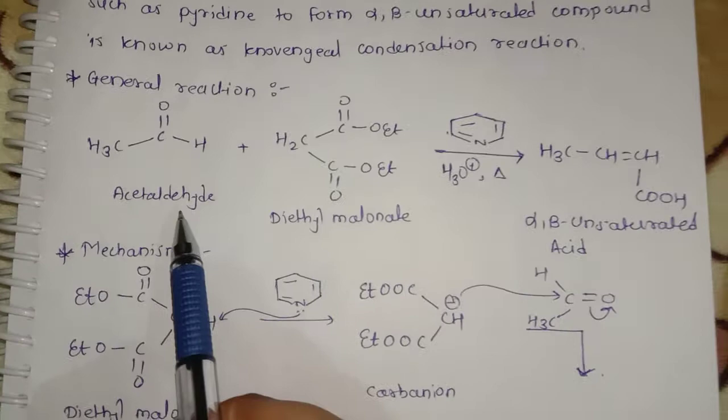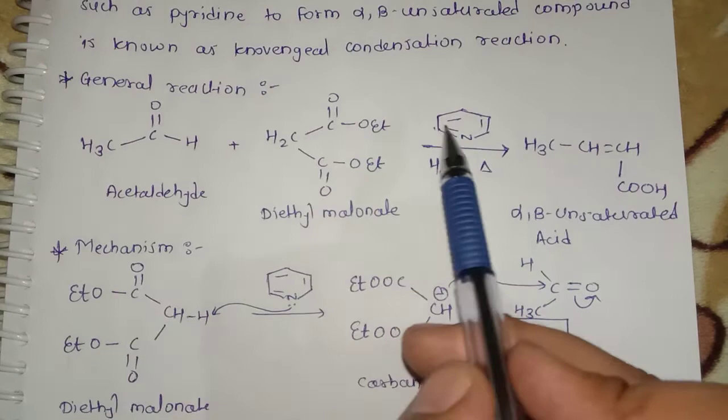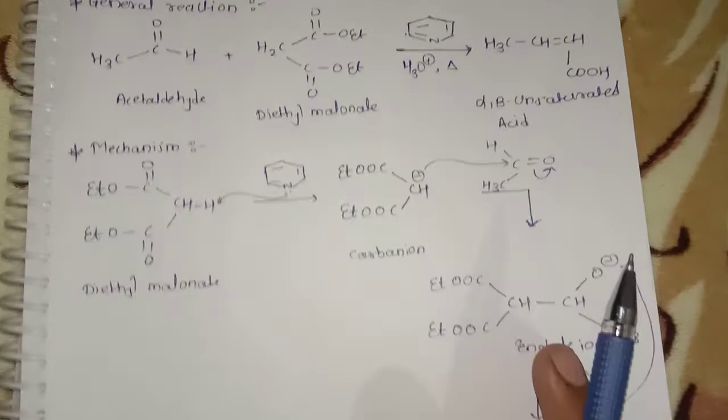General reaction: Acetaldehyde reacts with active methylene compound which is diethyl malonate in presence of base which is pyridine to form alpha-beta unsaturated compound.